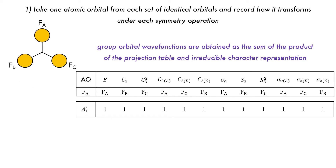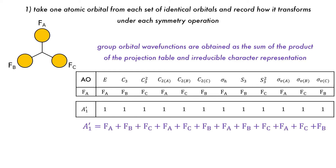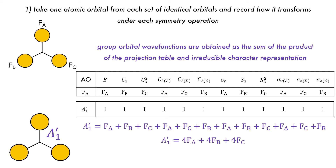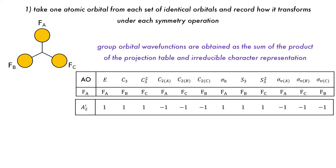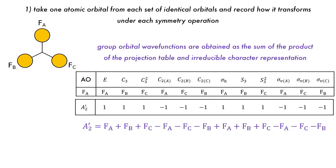Group orbital wave functions can be determined by multiplying the projection table values by the character of each irreducible representation and summing the results. So for the A1 prime representation, we multiply F-A by 1 and then F-B by 1 and so on to the end, giving us the sum total. This can be simplified so that A1 prime equals 4F-A plus 4F-B plus 4F-C, meaning there is equal contribution from F-A, F-B, and F-C. We can then go down the character table and do the same calculation for each representation, such as A2 prime, and we will obtain a function that when we collect the terms will cancel out and give A2 prime equal to 0, meaning there is no function that can be formed using these three orbitals.